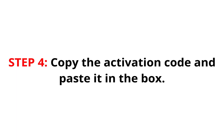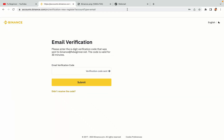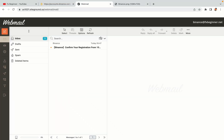Step 4: A confirmation code will be sent to your mail. Open your mail inbox, copy the code and paste it in the box to fully activate your Binance trading account.